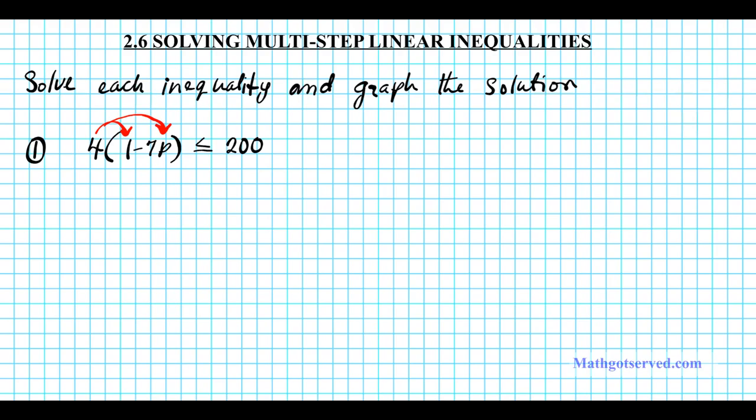So if we distribute we'll have positive 4 minus 28p. 4 times 7 is 28 less than or equal to 200.